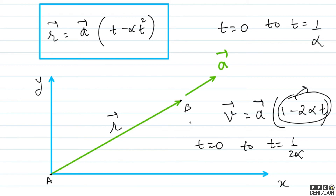So t equals 1 by 2 alpha is the time when the particle momentarily stops and reverses direction. If I find how far it has traveled from A to B (the turning point), and double it, I'll get the total distance, because the particle goes from A to B and then returns from B to A.